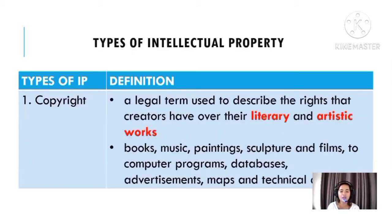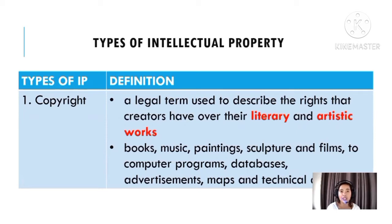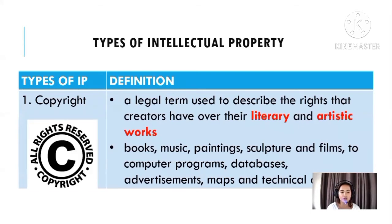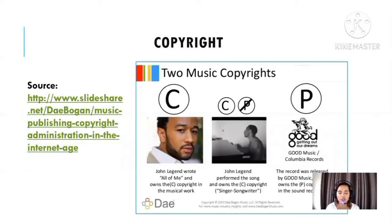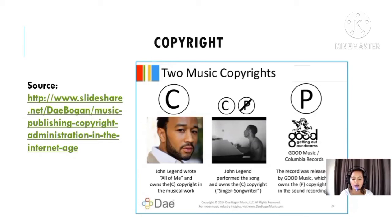Copyright is a legal term describing the rights creators have over their literary and artistic works — books, music, paintings, sculptures, films, computer programs, databases, and advertisements. That's copyright. If you copy these works, that's copyright infringement. For example, John Legend owns the copyright to 'All of Me' as the musical work and as the performer, and the record label owns the copyright in the sound recording — so that's two music copyrights.